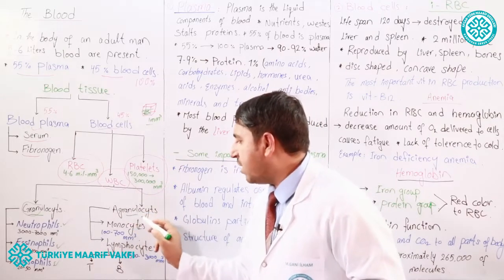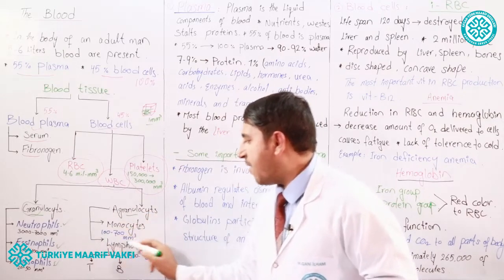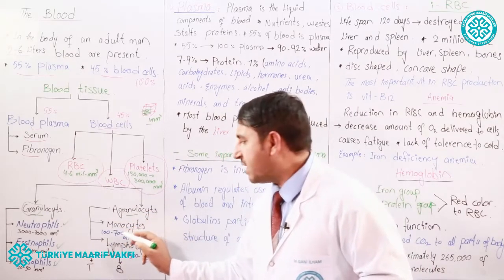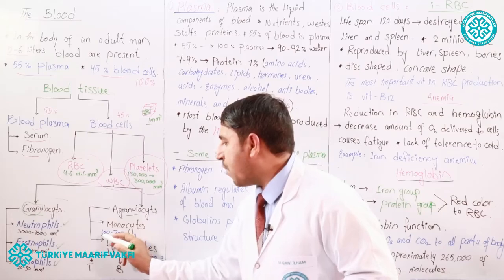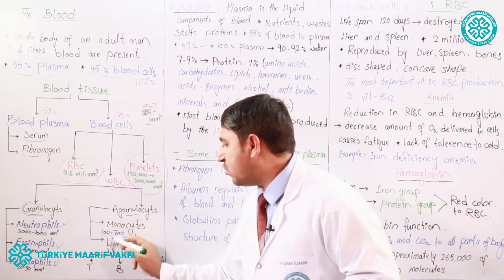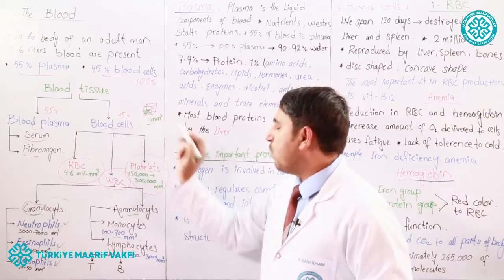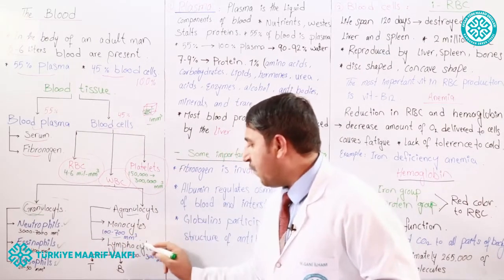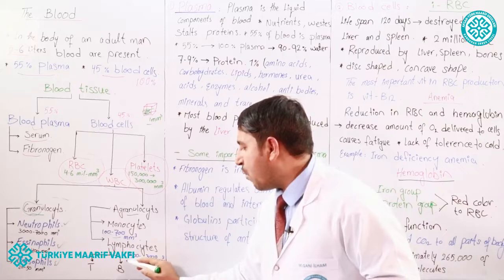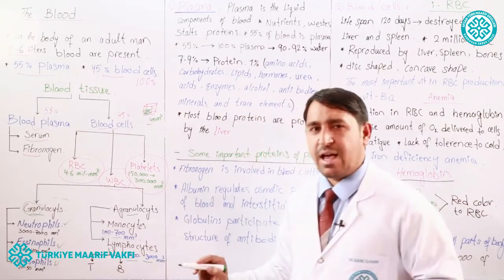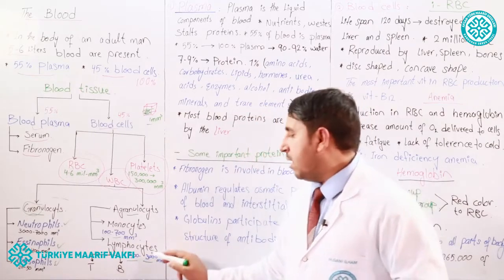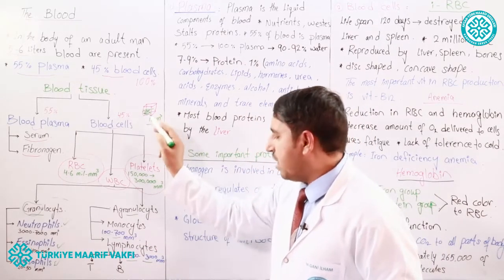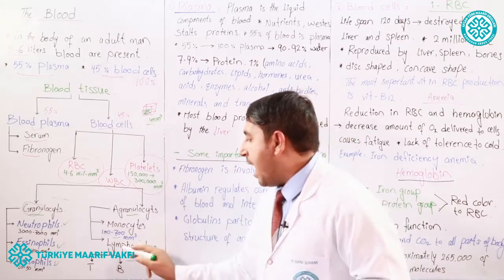From agranulocytes, we have monocytes, which range from 100 to 700 in one millimeter cube, and lymphocytes, which range from 150 to 3,000 in one millimeter cube.